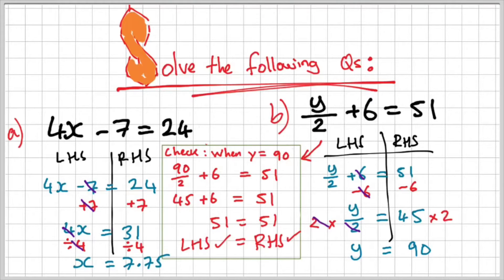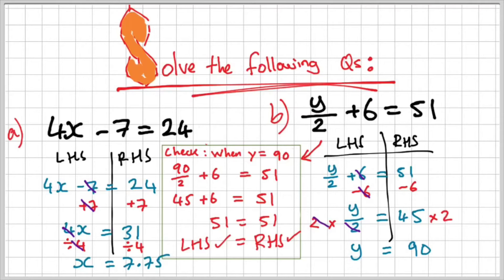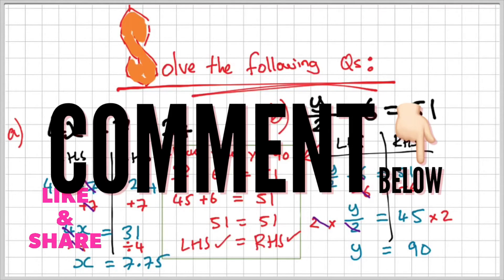Remember, whatever you do to the left-hand side, you have to do to the right-hand side in order to keep the equations balanced. For example, if we minus 6 from the left-hand side, we have to minus 6 from the right-hand side. If we multiply the left-hand side by 2, we have to multiply the right-hand side by 2. So that's solving linear equations using inverse operations. If you found the video helpful, drop me a like, and if you have any questions, put them in the comment section below. I'll see you in the next one.